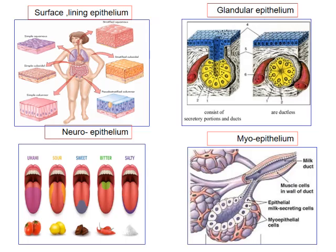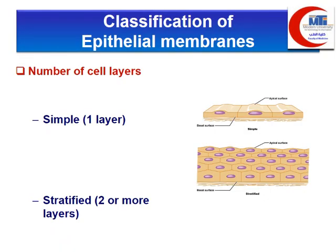There are four main types of epithelium. First, surface or lining epithelium, which covers body surfaces or lines cavities such as the skin, gastrointestinal tract, or respiratory tract. Second, glandular epithelium. Third, neuro epithelium. Fourth, myo epithelium. We will start with the surface or covering epithelium.